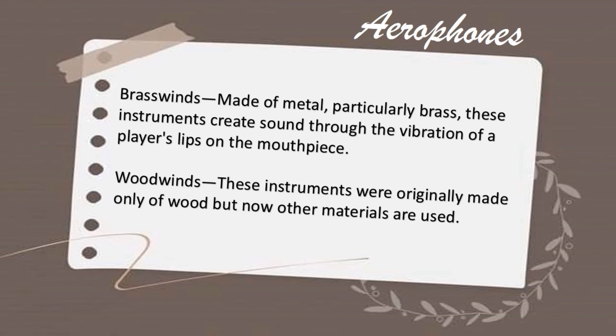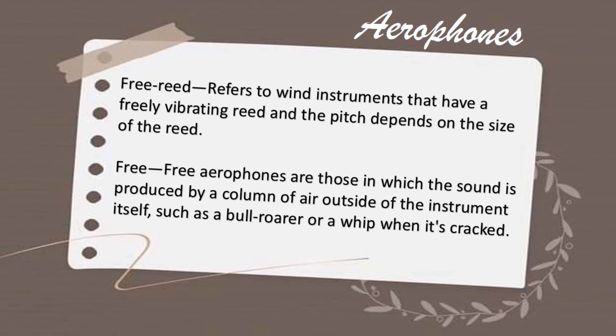The second type is woodwinds — originally made of wood, but now other materials are also used. The third type is free reed, which refers to wind instruments that have a freely vibrating reed, and the pitch depends on the size of the reed. The fourth type is free aerophones, where sound is produced by a column of air outside of the instrument itself — such as the bullroar or a cracked whip.